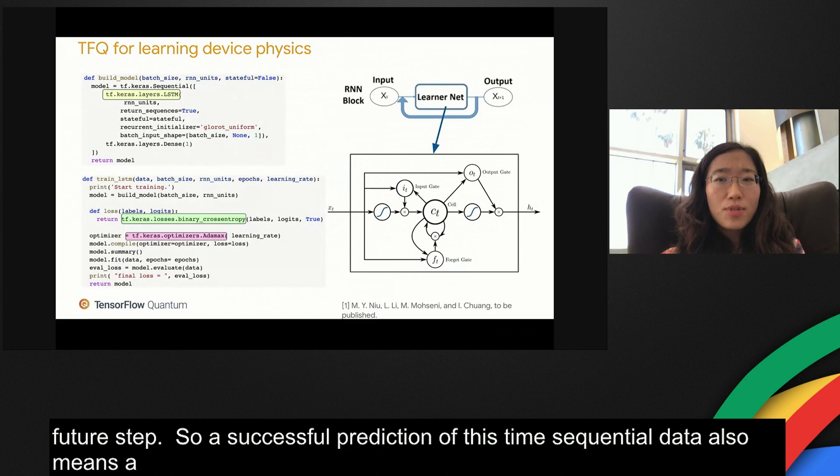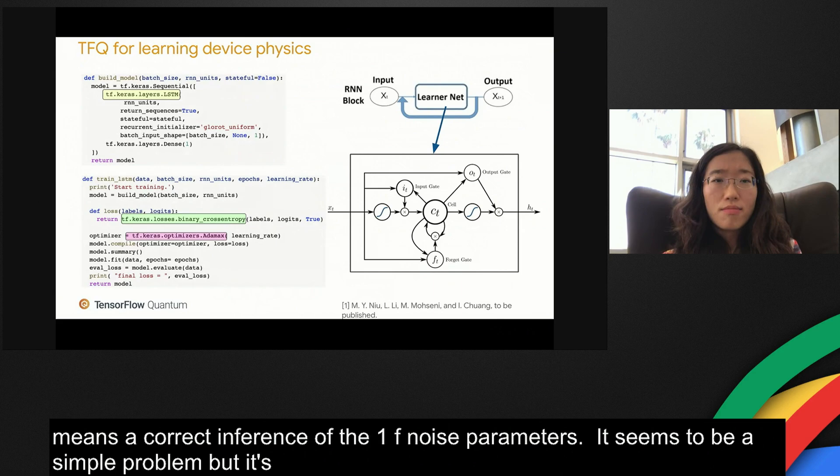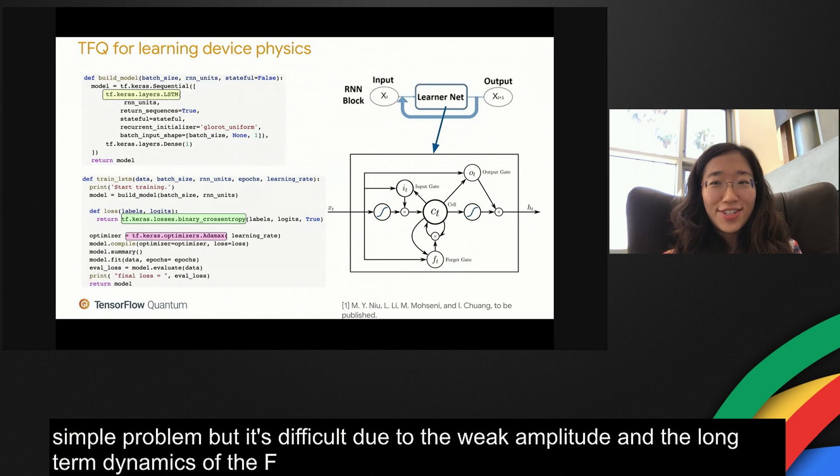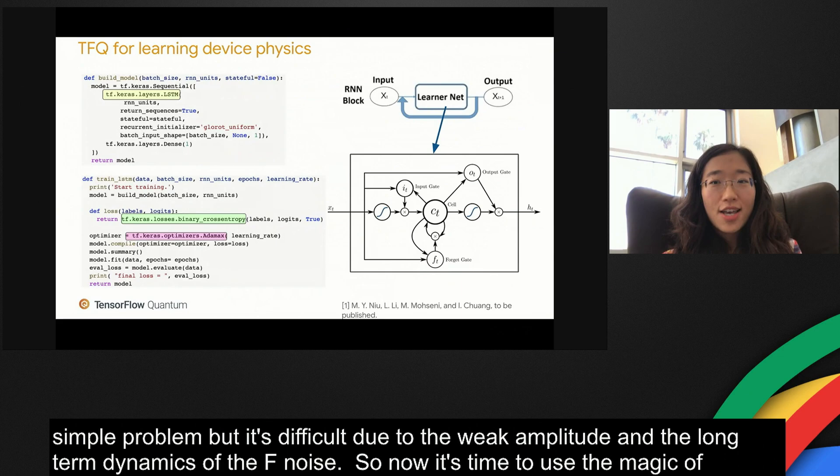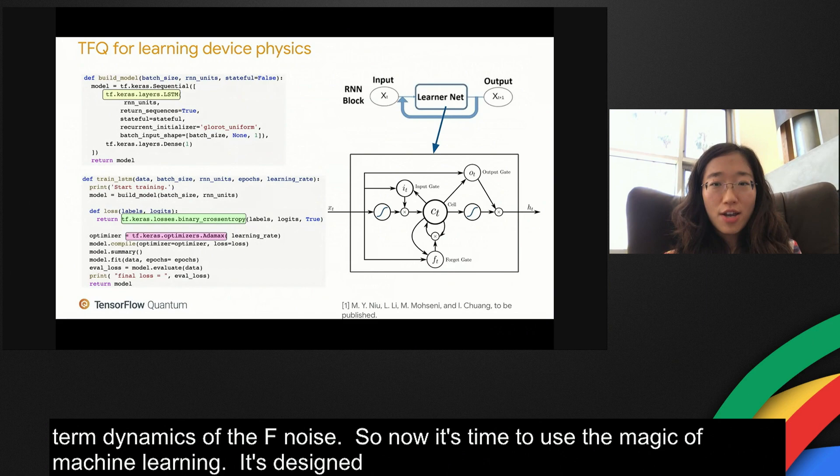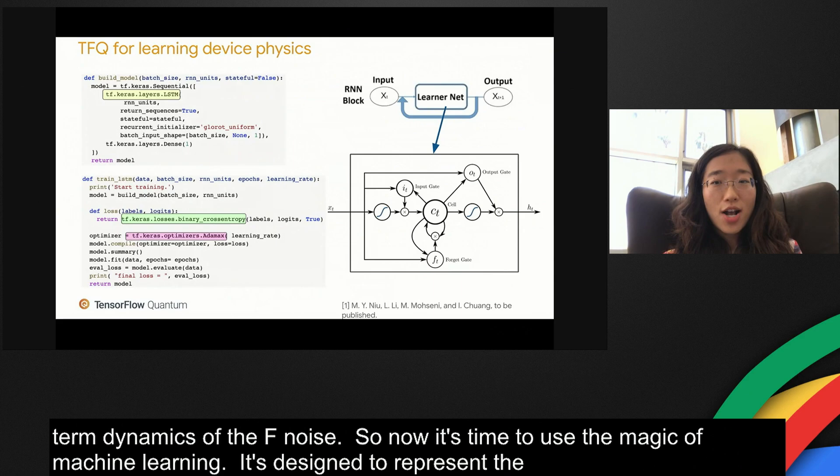It seems to be a simple problem, but it's difficult due to the weak amplitude and the long-term dynamics of the 1/f noise. Now it's time to use the magic of machine learning. Recurrent neural network is particularly designed to represent the time sequential data efficiently. One of the most widely used recurrent neural networks is called long short-term memory, which explicitly parameterizes the balance act of prioritizing the long-term versus short-term memory.